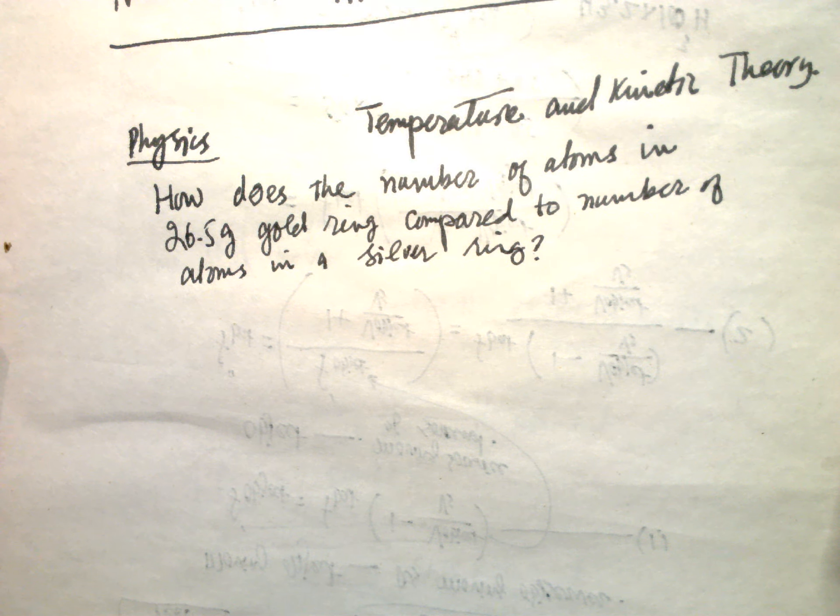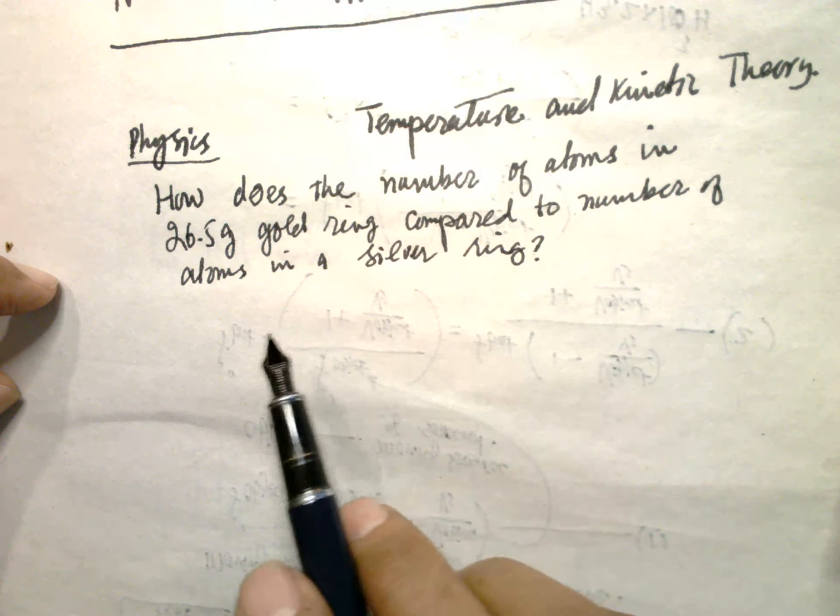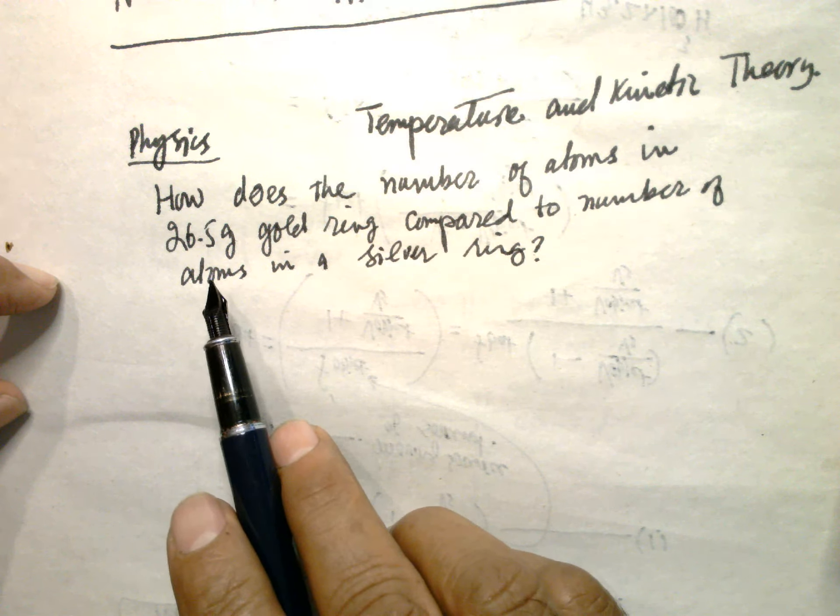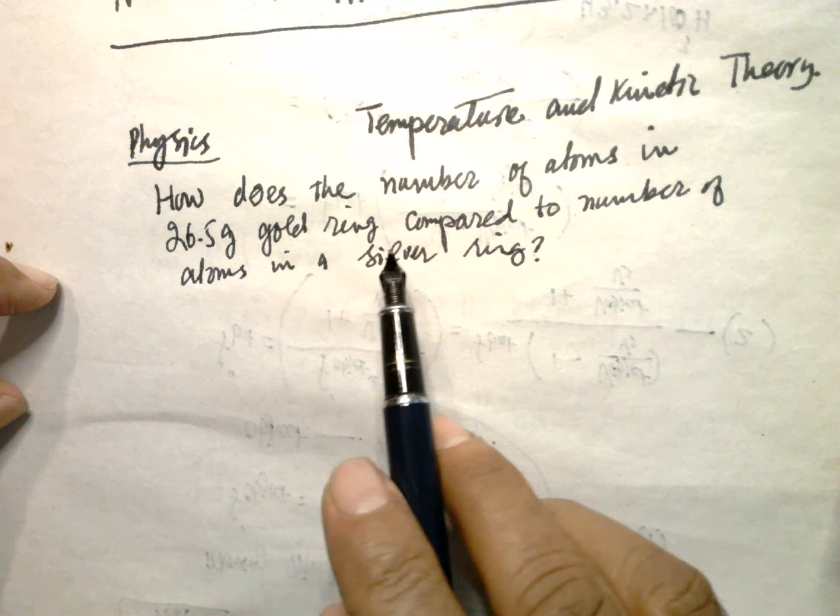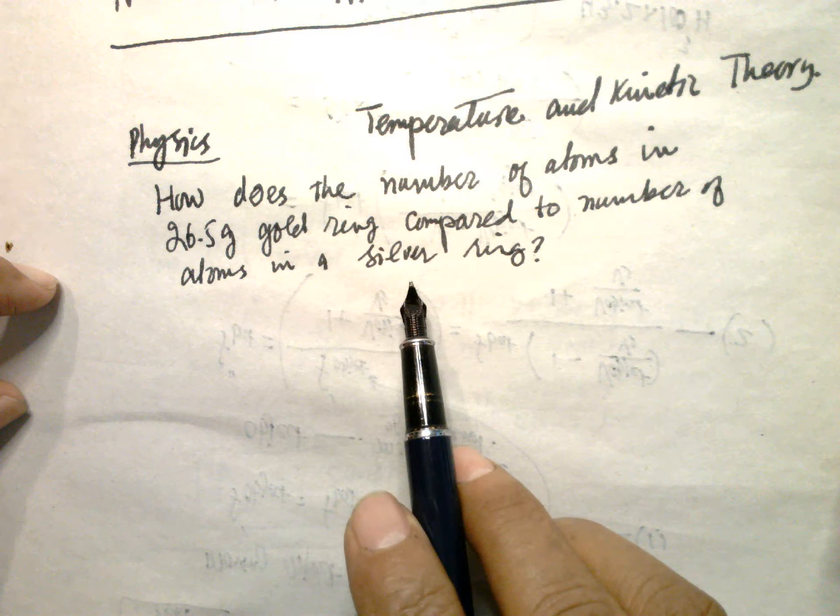Hello Physics, Temperature and Kinetic Theory. The problem is: how does the number of atoms in a 26.5 gram gold ring compare to the number of atoms in a silver ring?